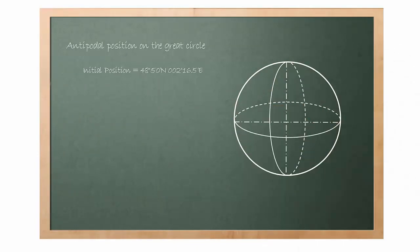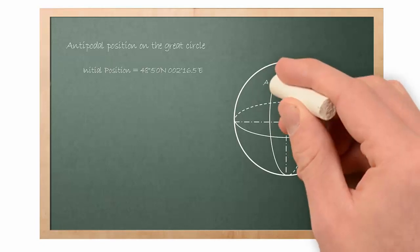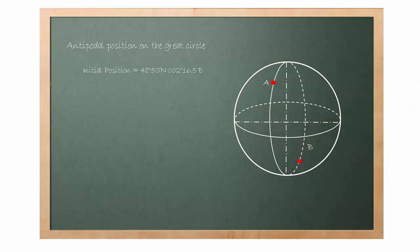Imagine this is the Earth. The given position Isi Lesmolino is A and the opposite position is B. How do we confirm that B is the opposite position of A?